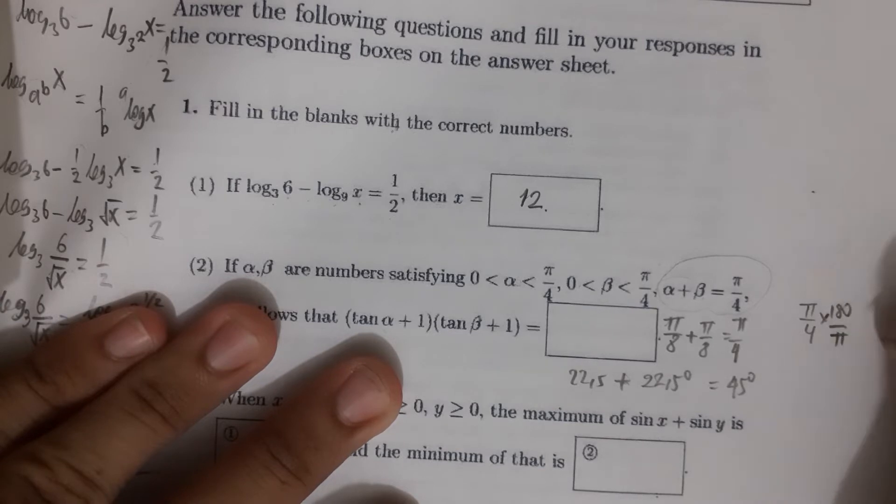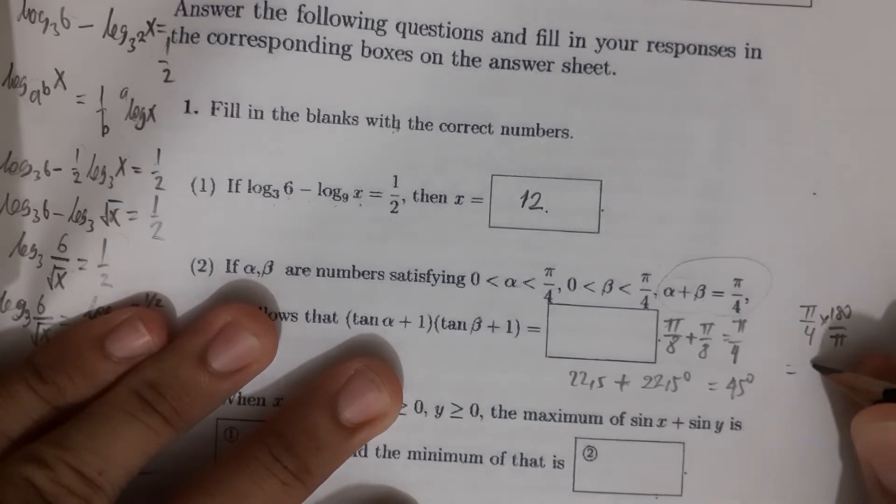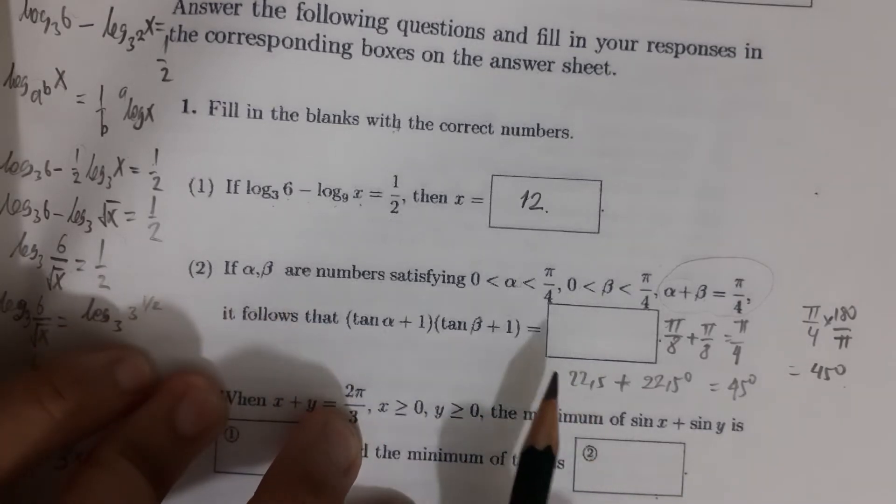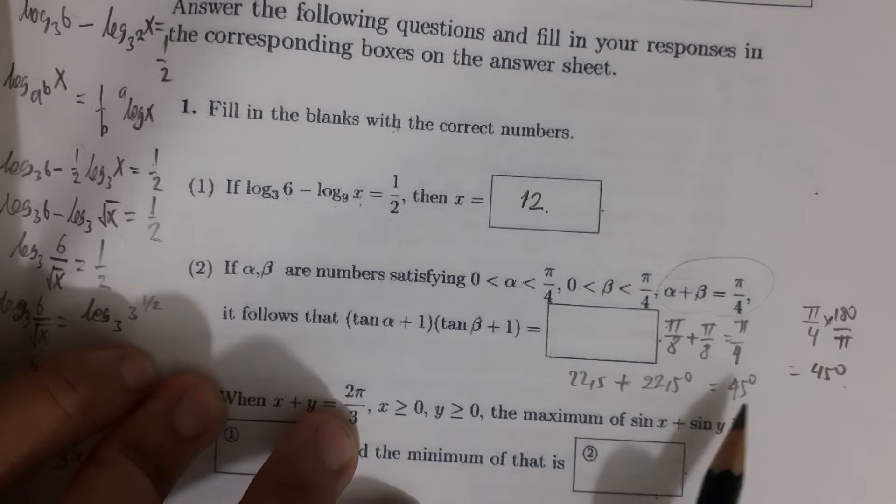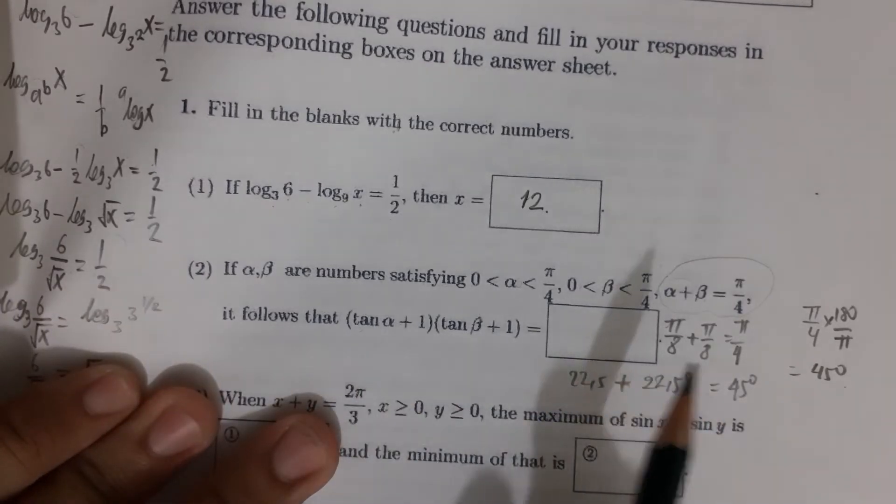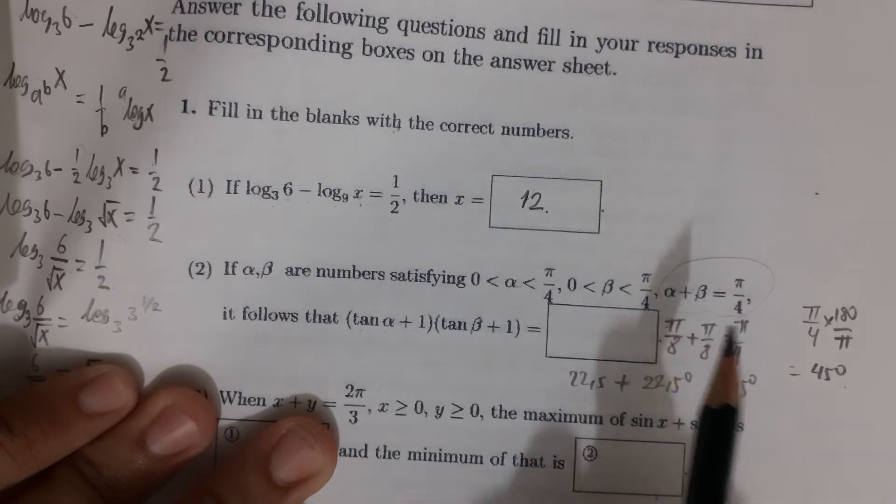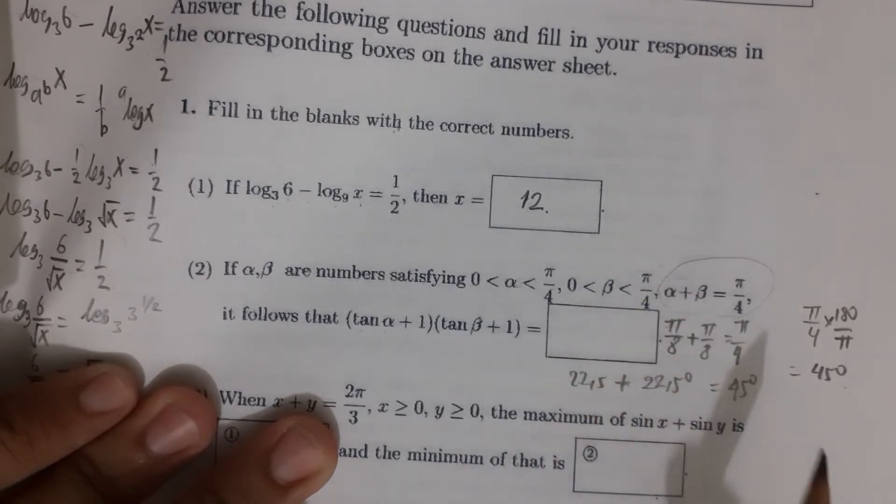We know that tan 45° = 1, but what about tan 22.5°? Because alpha stands for π/8, which is 22.5 degrees, and also beta.